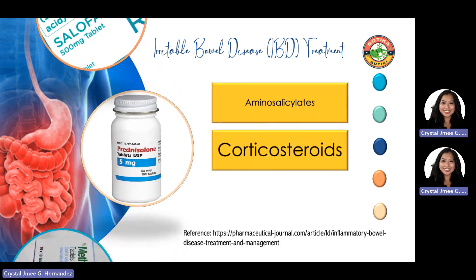The next treatment option is corticosteroids. Both patients with UC and CD who are not able to achieve remission with 5-ASA can be escalated to a more potent anti-inflammatory agent — corticosteroids. However, they should only be used acutely and not for maintenance therapy. The aim of treatment with corticosteroids is to induce remission and to maximize local effects while limiting systemic effects. This has been more important during the COVID-19 pandemic because it is vital to limit the time spent in hospital by immunocompromised patients. Corticosteroids used include prednisolone, beclometasone, and budesonide, which are considered broad-spectrum anti-inflammatory agents that work by modulating several inflammatory pathways.